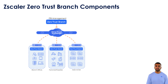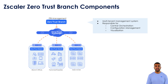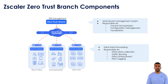Zscaler Zero Trust Branch has two key components. First, Zero Trust Branch Management — a multi-tenant, highly reliable management system deployed in AWS and offered as a SaaS. It is responsible for central orchestration, visualization, and configuration management, and can manage thousands of Zero Trust Branch gateways across different customers and locations. Second, Zero Trust Branch gateways — high-performance inline data forwarding appliances available in both physical and virtual form factors, typically deployed as a cluster per site. They are responsible for metadata collection, traffic routing, policy enforcement, and flow logging.